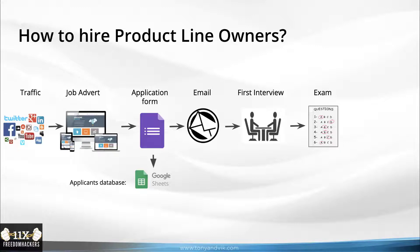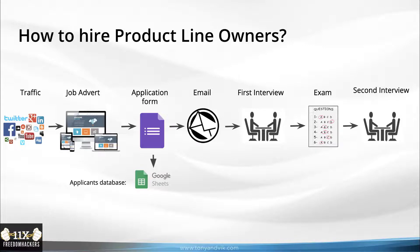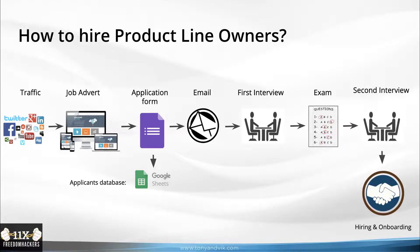After they've sent you back the exam and you've validated it, you may want to give another exam — keyword research or a product blueprint are perfect exams. When you like the results of these exams, you can have the second interview where you decide whether you want to hire this person or not. Now you negotiate the salary, the terms, and so on. When you're confident, you sign a contract and onboard that person to your business.